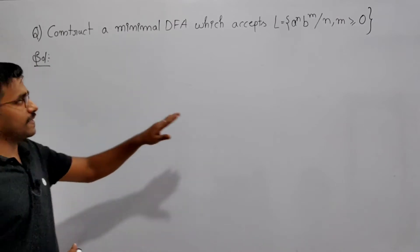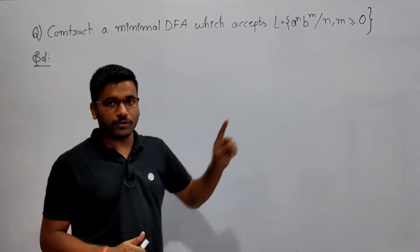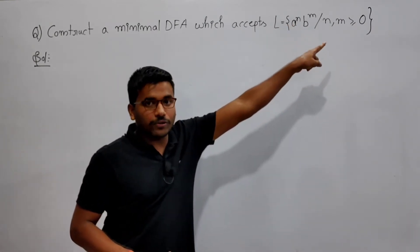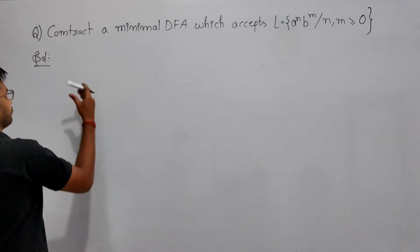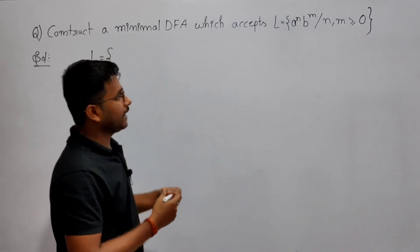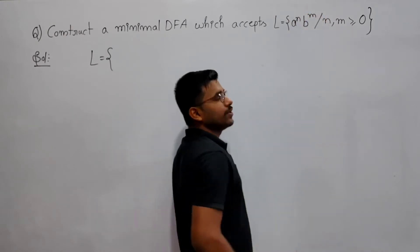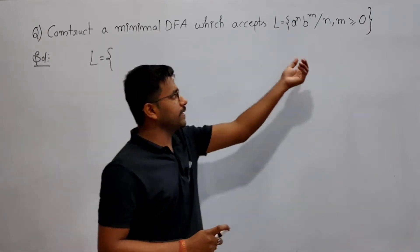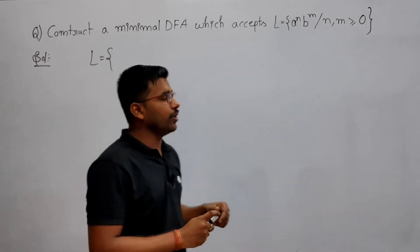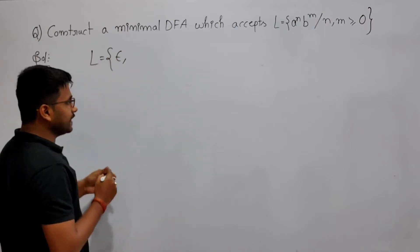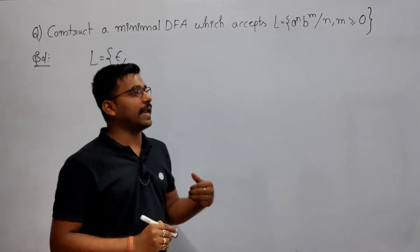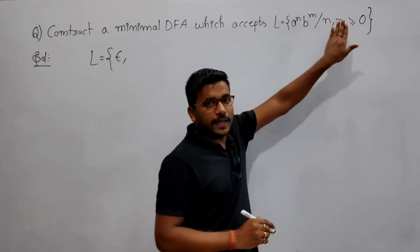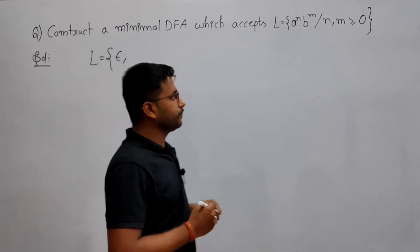The language is defined as a^n b^m where n, m ≥ 0. Since both n and m can be zero, we can assume both as zero, which means epsilon belongs to the language. You should write this first — the empty string belongs to the language because n and m are both greater than or equal to zero.